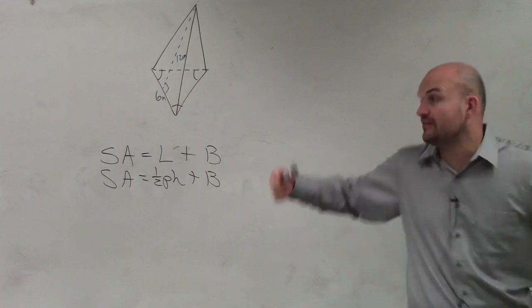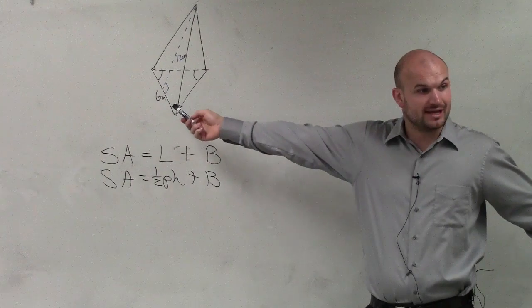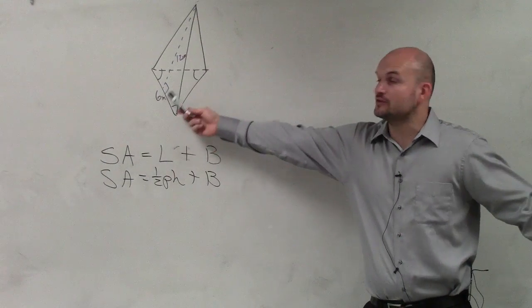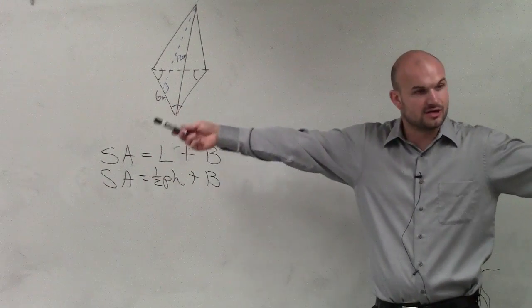Now in this example, they're giving us a regular polygon for our base. So therefore, that's a triangle that has all the sides length. So therefore, if one side is 6, since it's regular, that means all the sides are the same, and all the angles are the same.